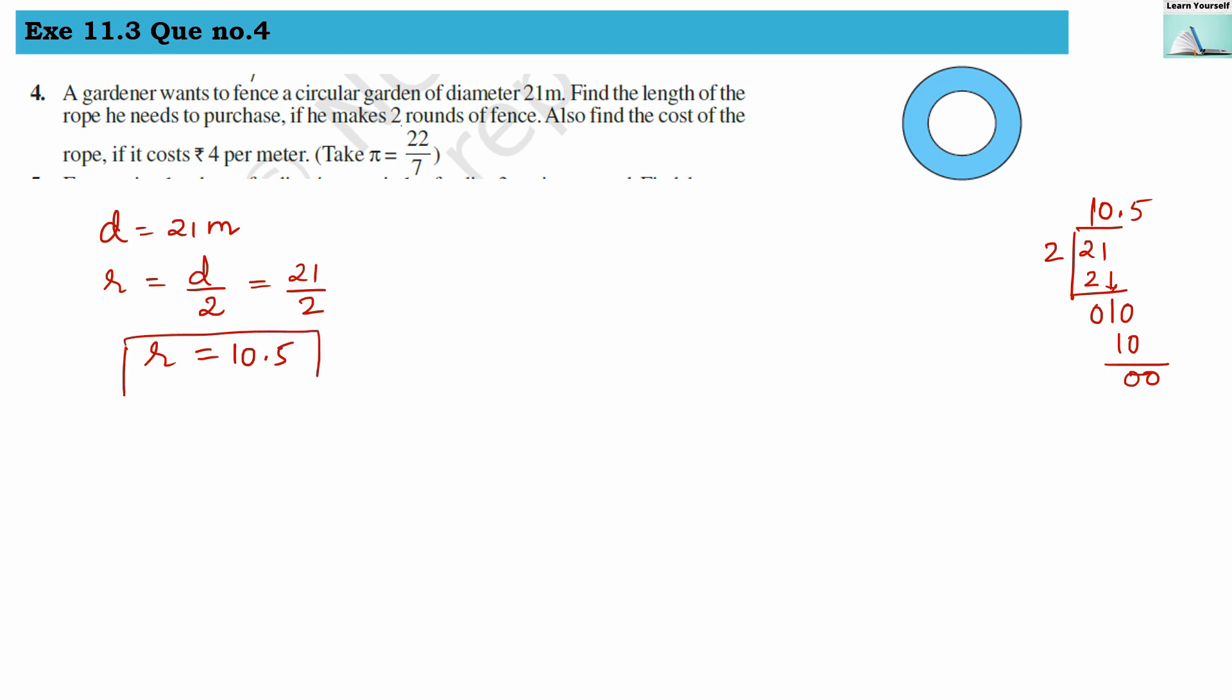Now let us find out the circumference. Circumference equals 2πr. Now π equals 22/7 as they have said in the question, times 10.5. So 44 times 10.5 divided by 7. Let us divide: 10.5 divided by 7. 7 ones are 7, so we get 3. Taking 5 down, and crossing the decimal point, 7 fives are 35. We get 1.5.